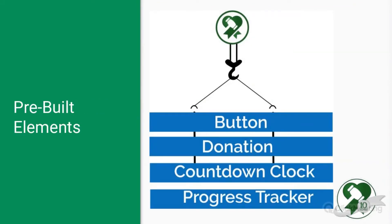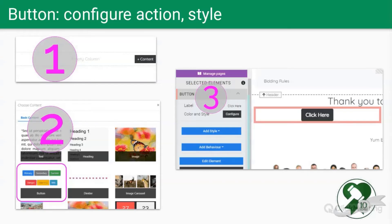Pre-built elements make quick work of adding a button, a donation element, a countdown clock, and a progress tracker. Our developers made these as smart elements that pull triggers from your dashboard settings. Button configuration is available for both action and style — you can change the label, the target it takes you to, or even show a video. You can also change the color and style to match the overall theme. I'm also going to use this video to illustrate the copy element task — this is a major time saver.